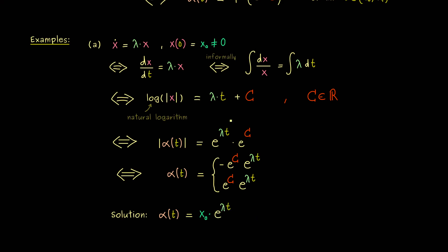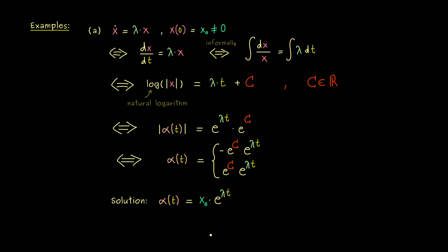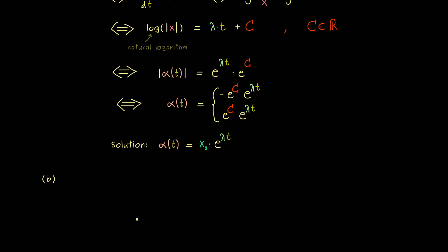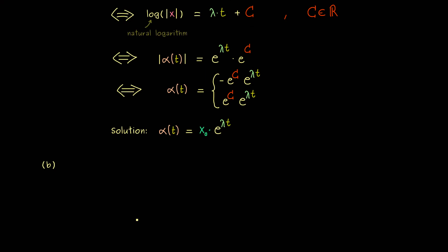So the solution is simply x₀ times the exponential function of lambda t. This is a standard but very important example. We have found all solutions in this form, and for this example we can also say something about the uniqueness of solutions — but we will talk about that issue in more generality later.